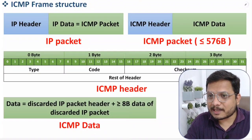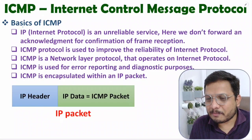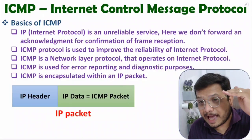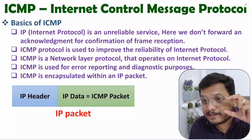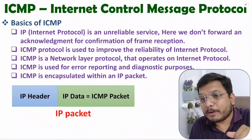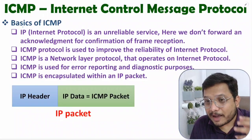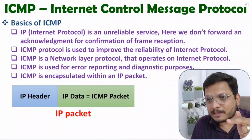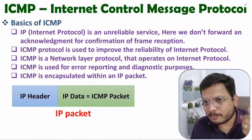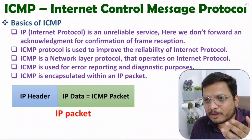Let us discuss the basics of ICMP. ICMP is implemented on IP. The reason is IP is an unreliable service. In Internet Protocol, we don't forward acknowledgements. If acknowledgements are not forwarded, the sender will never know whether a frame was transmitted successfully or not.